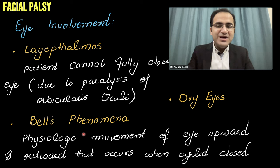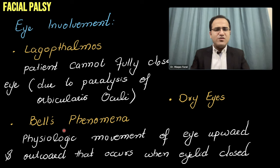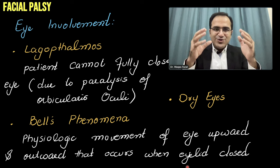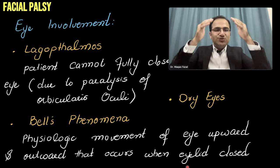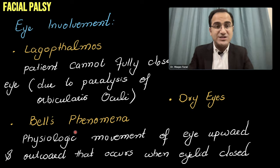There is a phenomenon called Bell's phenomenon. Normally, it is a protective physiological phenomenon: whenever we close our eyes, the eyeball moves upwards and outwards. These patients cannot close their eyelid, so you can appreciate that their eyes are moving upward — the cornea is going upward and outward. That is Bell's phenomenon. It is a physiologic phenomenon, but you can appreciate it just because they cannot close the eyelids.